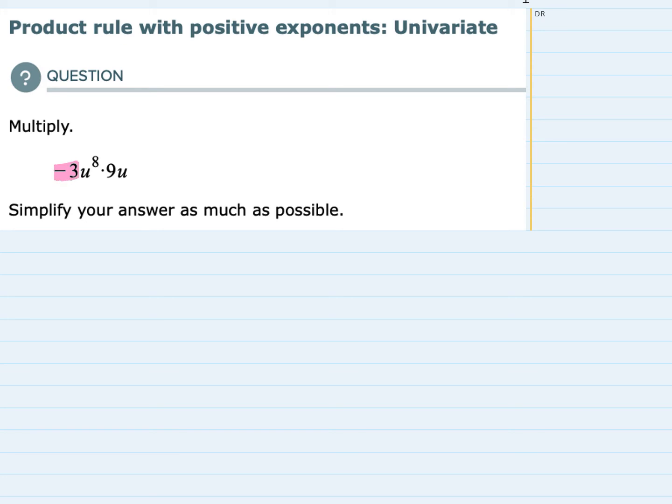We have the numerical part, these integer values. And since we're multiplying, I know that I'm going to be able to multiply those. So negative 3 times 9, we can put those together and we would have negative 27.